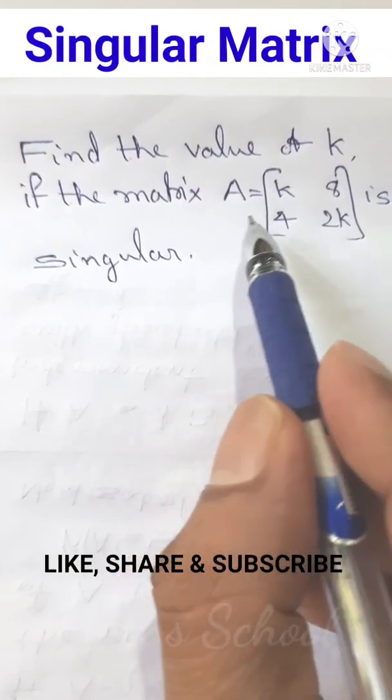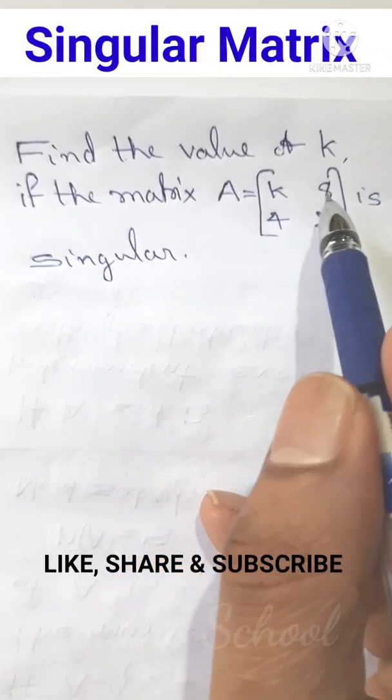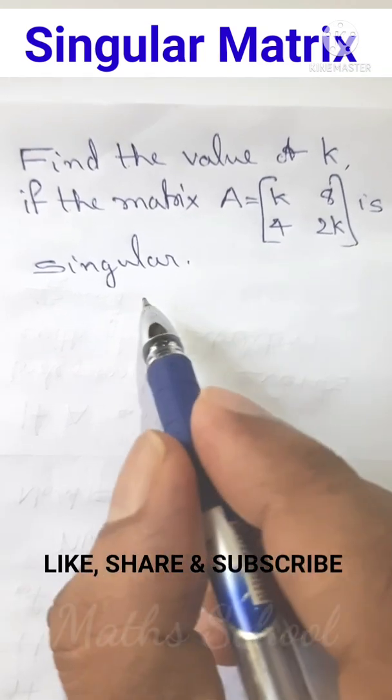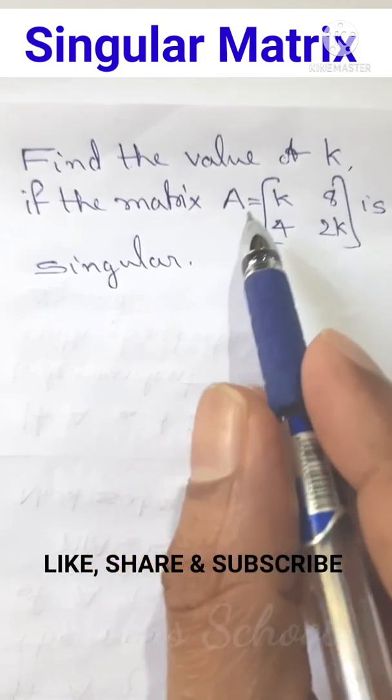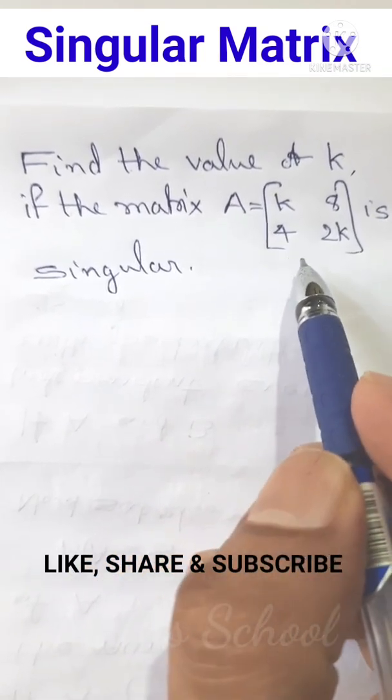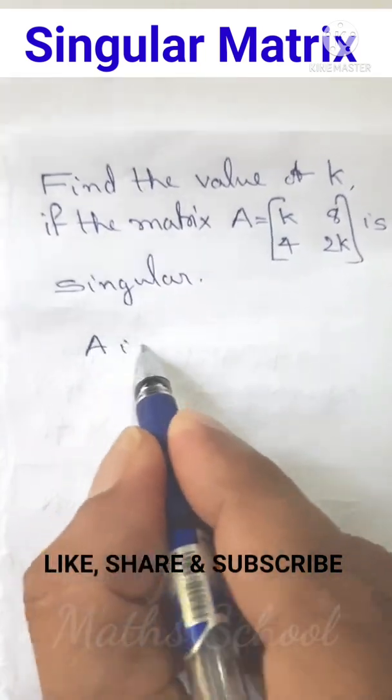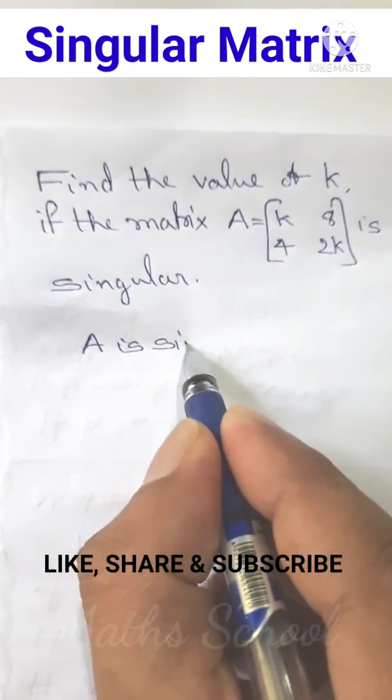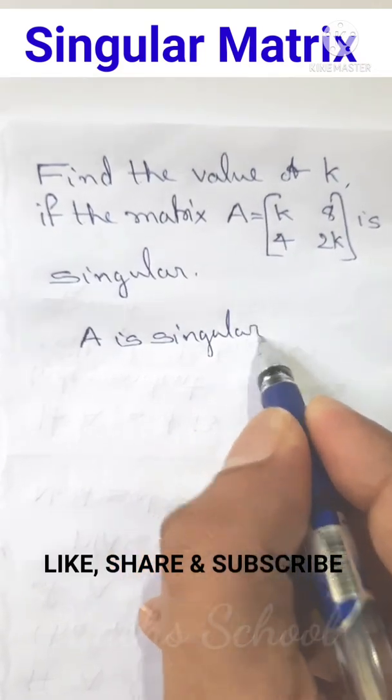Find the value of K if the matrix A equal to 2 by 2 matrix [K, 8; 4, 2K] is singular. Given that this matrix A is singular, A is singular implies...